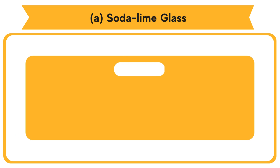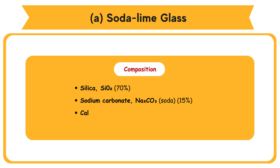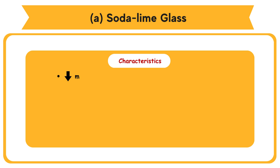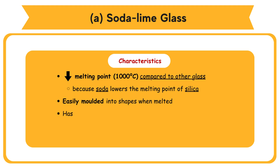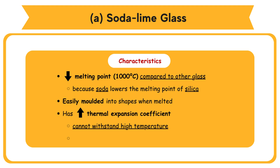Soda lime glass Composition: Silica SiO2 - 70%, Sodium carbonate Na2CO3 (soda) - 15%, Calcium carbonate CaCO3 - 10%, Others - 5%. Characteristics: Lower melting point of 1000°C compared to other glass, because soda lowers the melting point of silica. Easily molded into shapes when melted. Has high thermal expansion coefficient, therefore it cannot withstand high temperature and easily cracks when subjected to sudden temperature change.